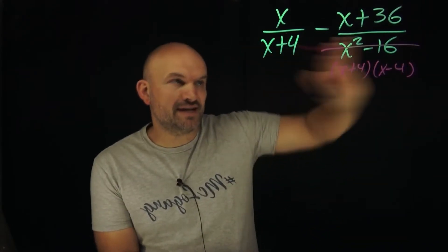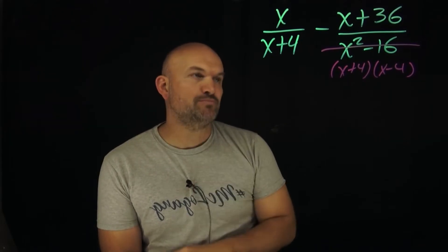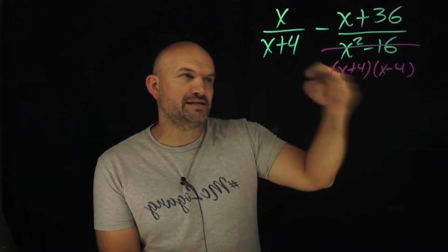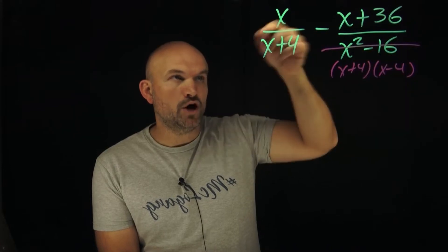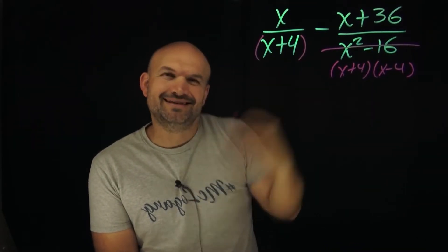So now you can see I crossed it out because here's my new denominator, right? Now the reason why that's important is because this denominator is represented as a product x plus 4 times x minus 4. Over here I already have the x plus 4. I'm going to put it in parentheses so we can keep things the same.